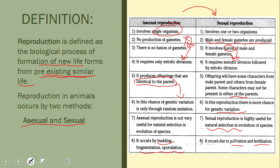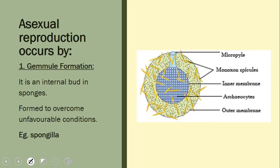Now we will see the asexual methods in detail. First is gemmule formation. A gemmule is an internal bud found in sponges and is formed under unfavorable conditions when the environment is not suitable for the organism.